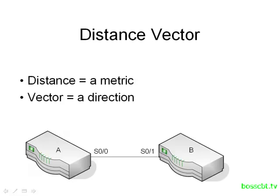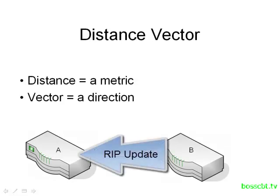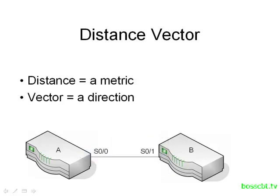That direction is usually the next hop router listed in the routing information. So if we take an example using RIP: router A learns about a route from router B. In terms of distance, the metric used in RIP is the hop count. In terms of the vector — the direction — that routing information is going to list a next hop router to get to that particular subnet. Here, the next hop would be router B. That's all we really mean by distance vector.